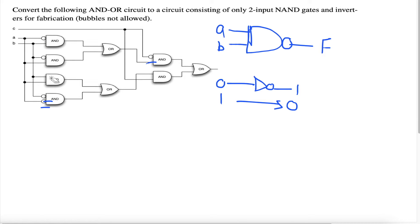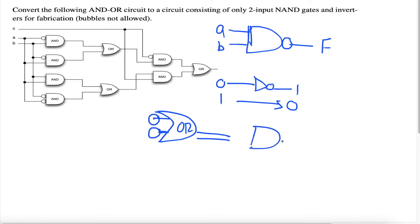There's one more piece of information we need when converting to NAND gates. If we have an OR gate with two circle bubbles at the two inputs, this is equivalent to a regular NAND gate. So an OR gate with two inverting bubbles at the inputs is equivalent to a NAND gate. Those are the three key pieces of information we need to complete this problem.